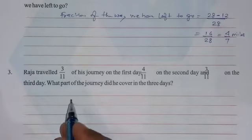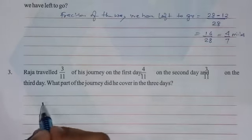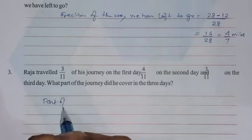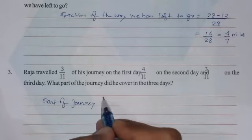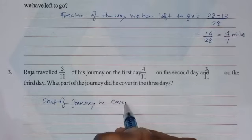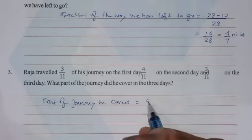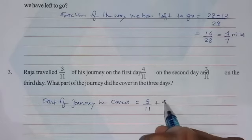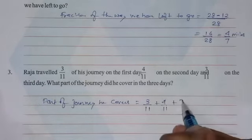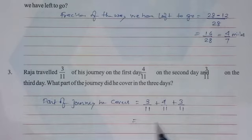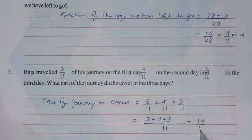So let's start. Part of journey he covers. Total covers 3/11 plus 4/11 plus 3/11. The denominator in all three numbers is the same, so 11 is the LCM. Now add numerators. You will get 10/11. So this is the answer to this question.